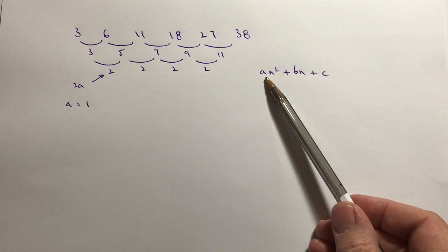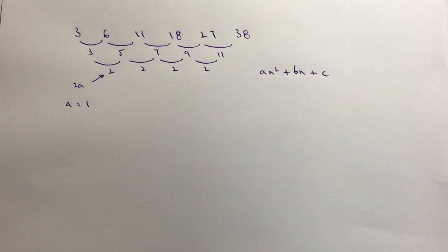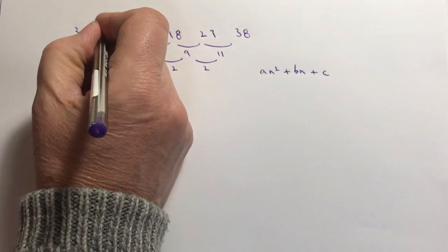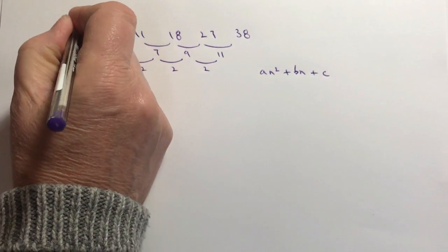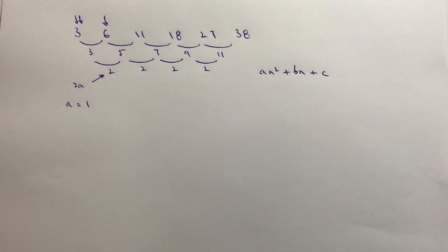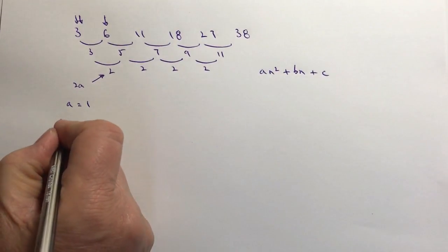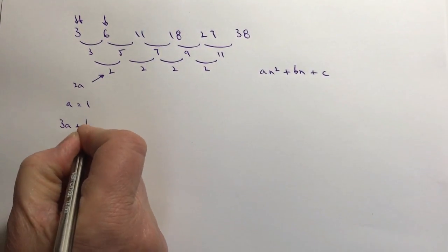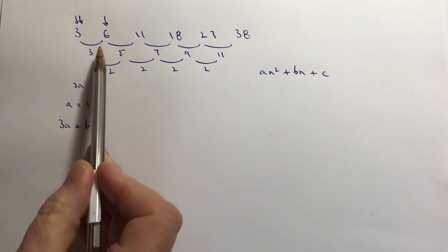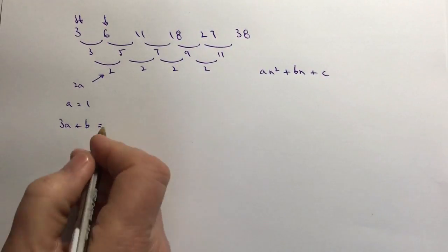However, just to tidy it up, normally it's written as n squared. The second thing that I do is I put three arrows at the top of my numbers here and that just reminds me of 3a plus b equals the difference between the two which is going to be 3.